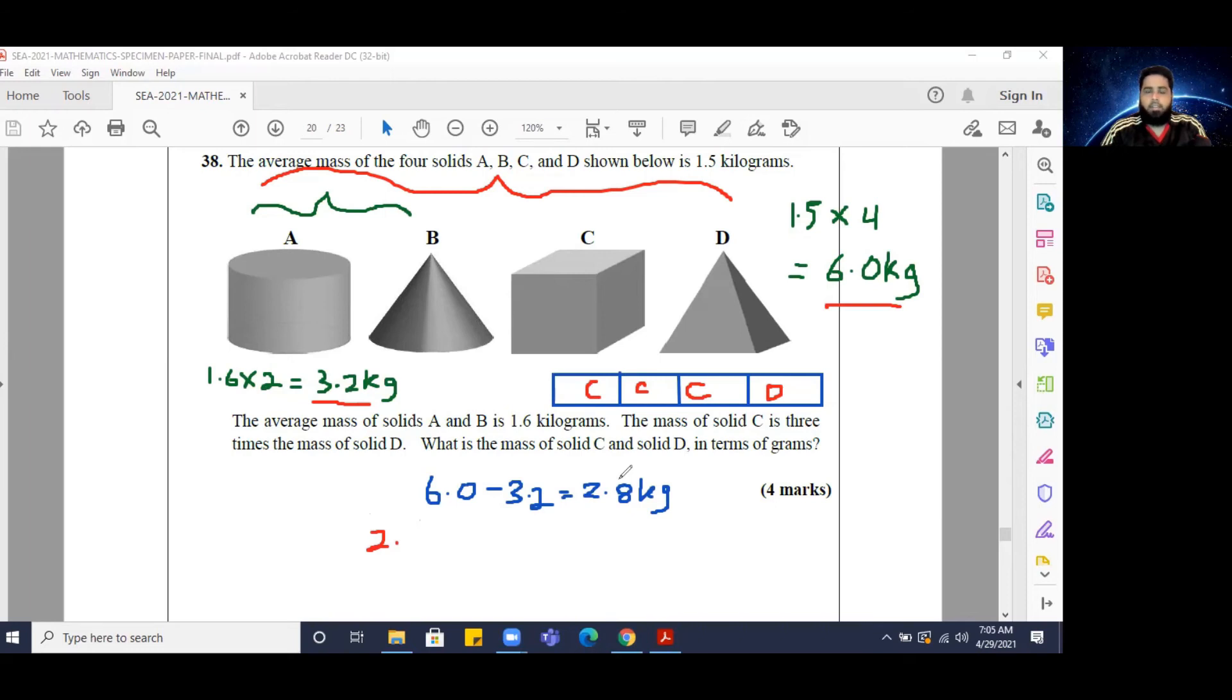So what I'm going to do here is just go ahead and convert 2.8 kilograms into grams, since they want our answer in grams anyway, and that is equal to 2800 grams. And I have to divide it by four to get the size of one of these blocks. So if I divide it by four, that is going to leave me with 700 grams.